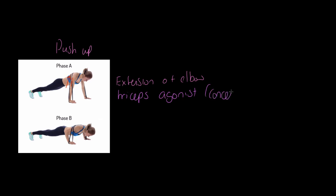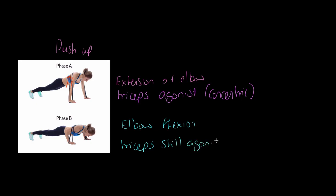When we look at the down phase — elbow flexion — what's interesting is that the tricep remains the agonist. The reason is that as we're lowering down towards the ground, the tricep is lengthening but still under tension. It's controlling the movement, preventing us from flying downwards to the floor. Therefore this is an eccentric contraction.